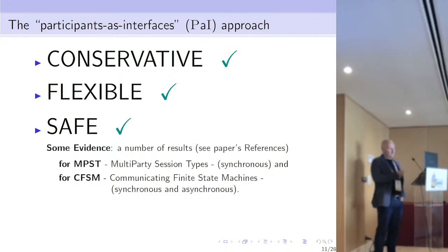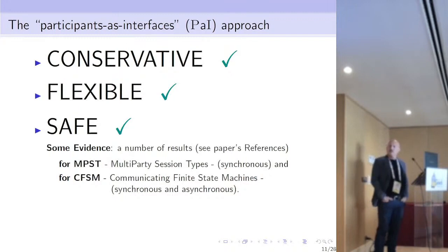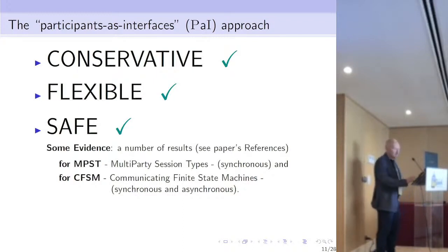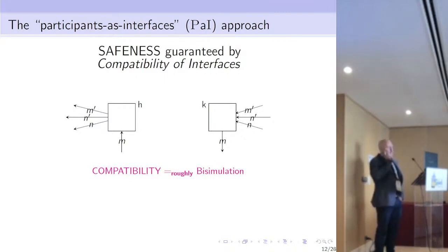For both synchronous and asynchronous communication, some conditions have to be placed on the component used as interface — for instance in communicating finite state machines we cannot have a mixed choice, and for the synchronous case the condition should be stricter. In any case, safeness is guaranteed by the compatibility of interfaces, and in all the results mentioned the compatibility is roughly — in some cases exactly — given by simulation.